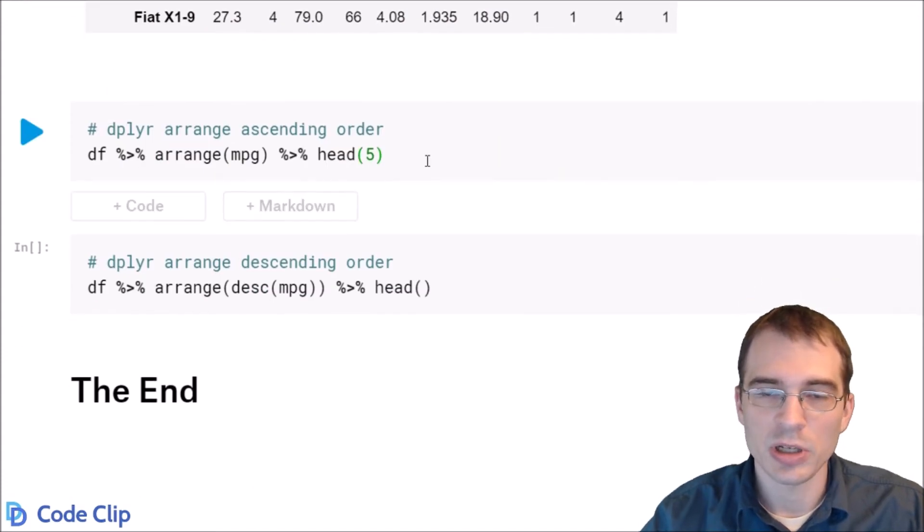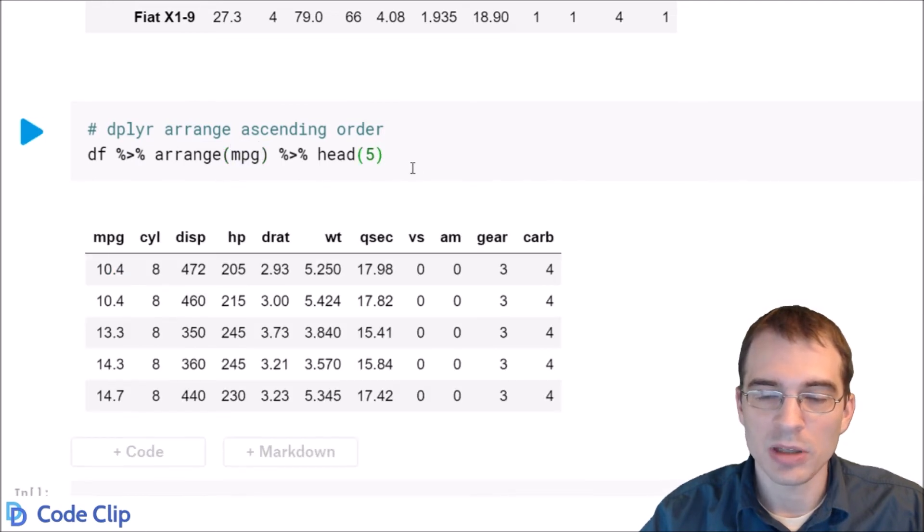Now if you want to do the same sorting but in dplyr, you use the arrange function. So here we're taking the data frame, we're piping it to the arrange function, and we're saying we want to sort by the mpg column. And this will do the same thing that we did in base R.